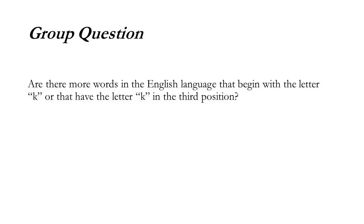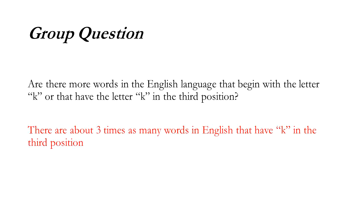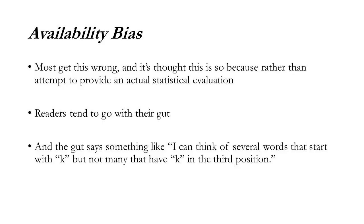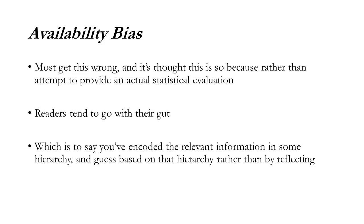Availability. Let me ask you this question: are there more words in English that begin with the letter K, or that have the letter K in the third position? Pause and think about it. There are three times as many words in English that have K in the third position. Most people get this wrong, and it's thought this is because rather than attempt to provide actual statistics, people tend to go with their gut — which says something like, I can think of several words that start with K, but not many that have K in the third position. This is called availability bias. You've encoded the relevant information in some hierarchy and you're guessing based on that hierarchy rather than reflecting — quick System 1 thinking. It can go awry.